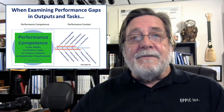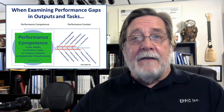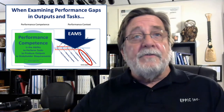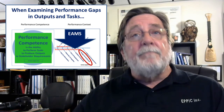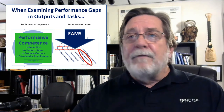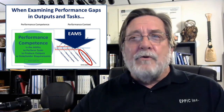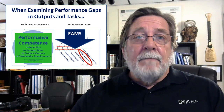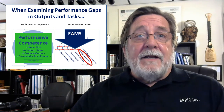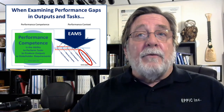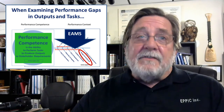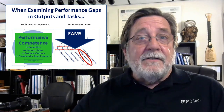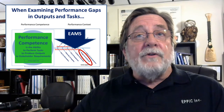When examining performance gaps in outputs and tasks, your second pass should look at the environmental enablers, such as adequate budget and headcount. Performance gaps are most often not due to knowledge and skill deficits. The budget and headcount system may need to be redesigned to meet the stakeholder requirements for outputs and the tasks, and then resourced adequately.